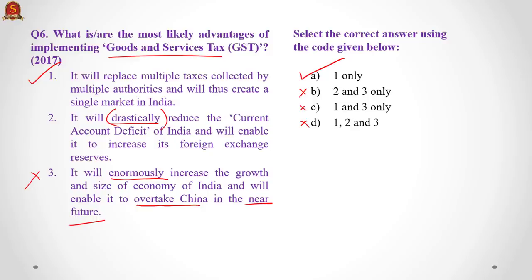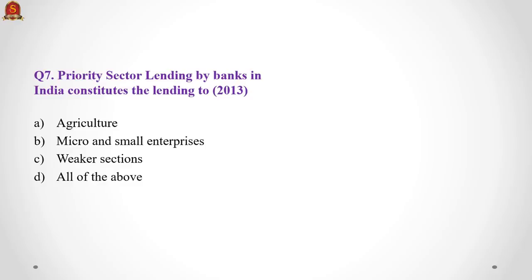Question 7: priority sector lending by banks in India constitutes lending to whom? Let us assume we have never heard this term. We know banks' primary activity is lending. What are priority sectors in India? Is agriculture a priority? Yes. Are micro and small enterprises a priority? Yes, they increase inclusivity. Are weaker sections a priority? Yes. Logically, the answer should be all of the above, and that is indeed the answer — D.